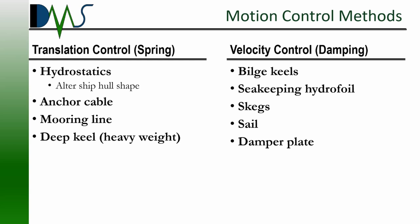Some other things that people don't think of initially: an anchor cable or a mooring line. Those all provide a varying force output depending upon how the ship is moving. As you can think of a ship trying to pull away from a dock, your mooring lines get tighter and provide more of a restraining force. Another one that's not always intuitive is a deep keel. If you have a heavy weight positioned far below the ship, imagine the ship rolling to one side — that's going to raise the weight higher and provide a reaction force trying to pull the ship back to a level keel.